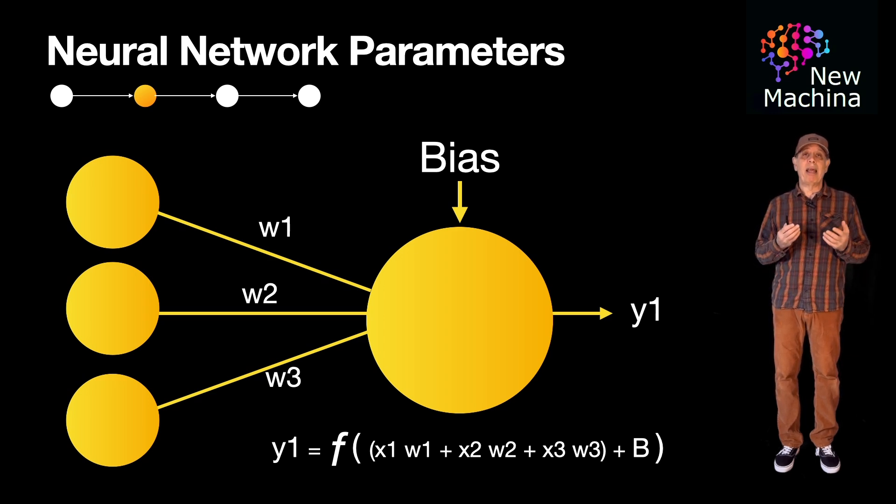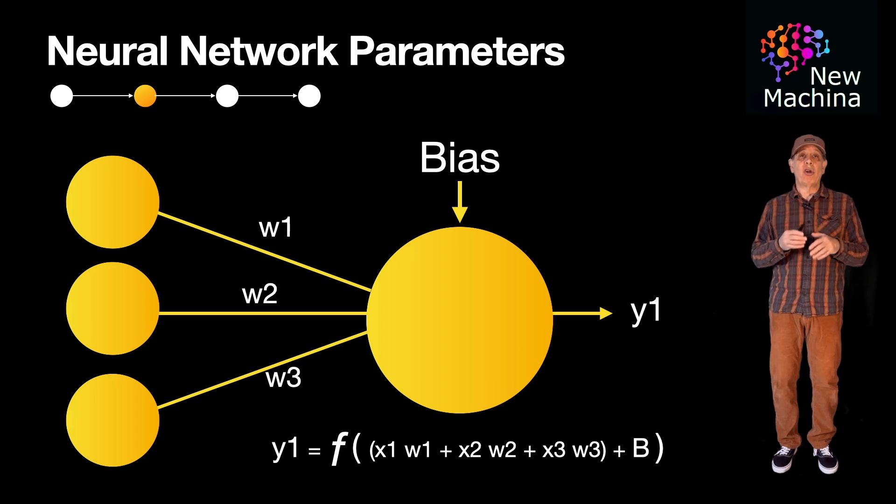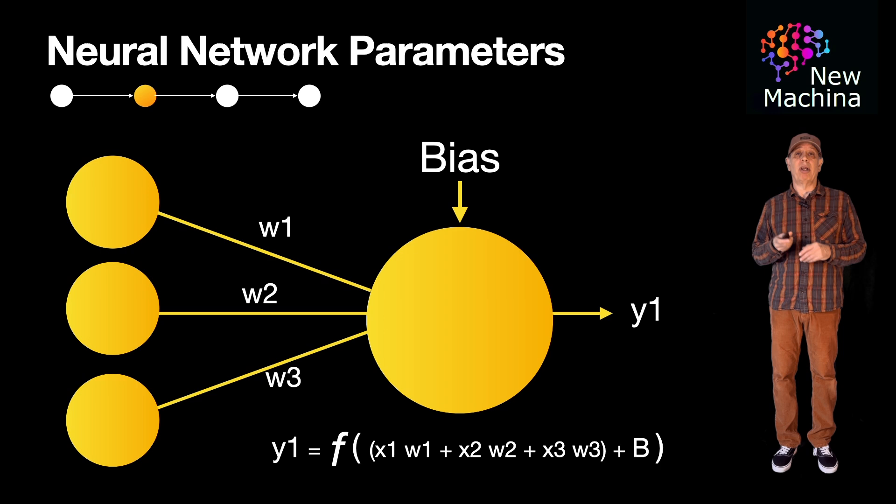So when a neural network is created, how are these weights and biases determined? Well, initially they are initialized to random values. The neural network can then be trained. Training the neural network involves a series of steps to optimize its weights and biases so they can make accurate predictions.